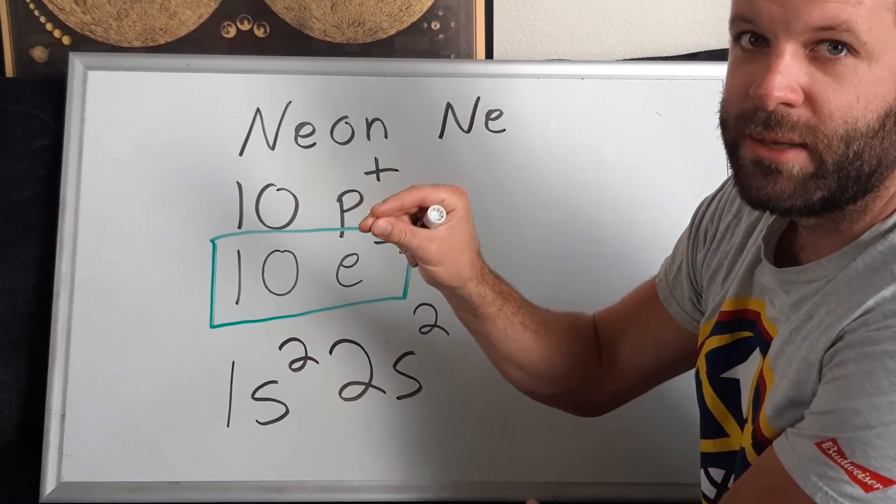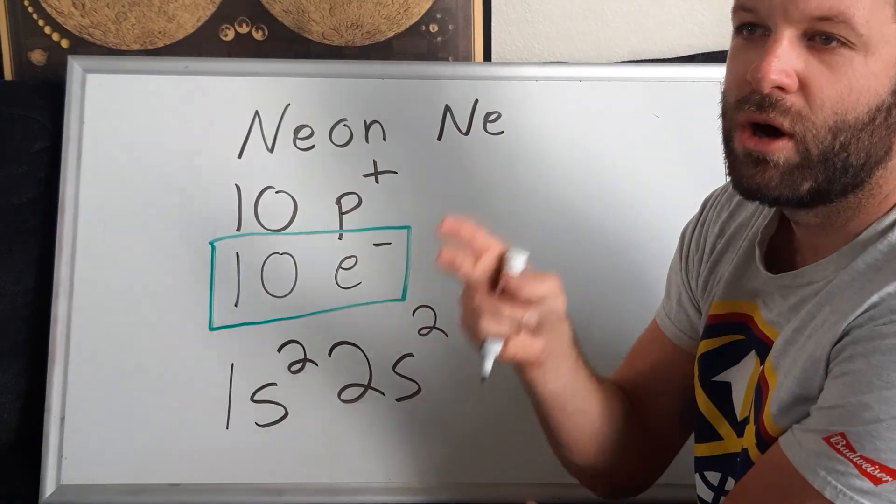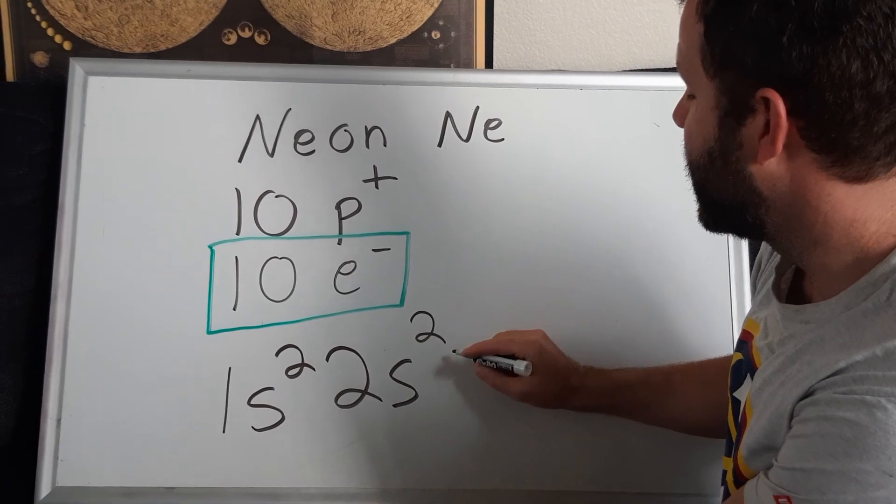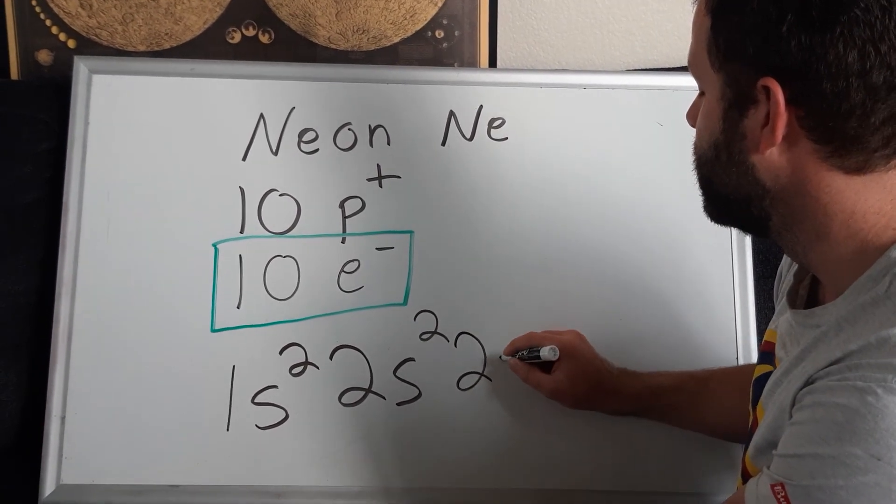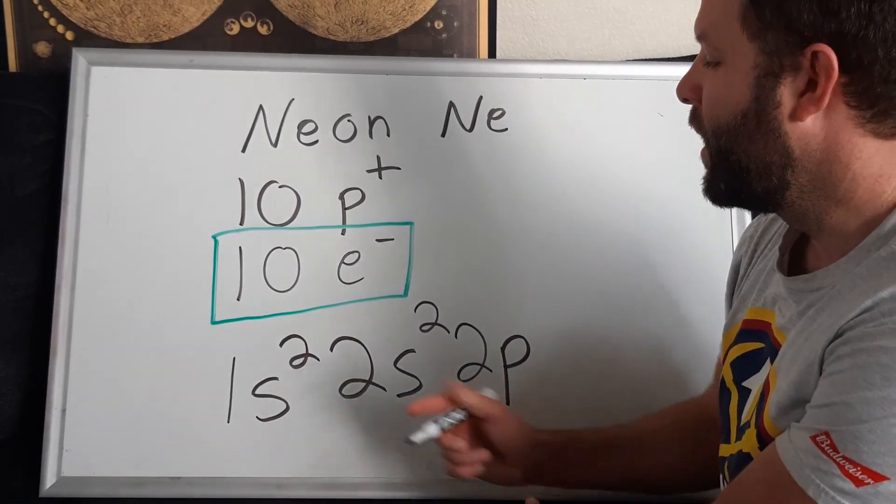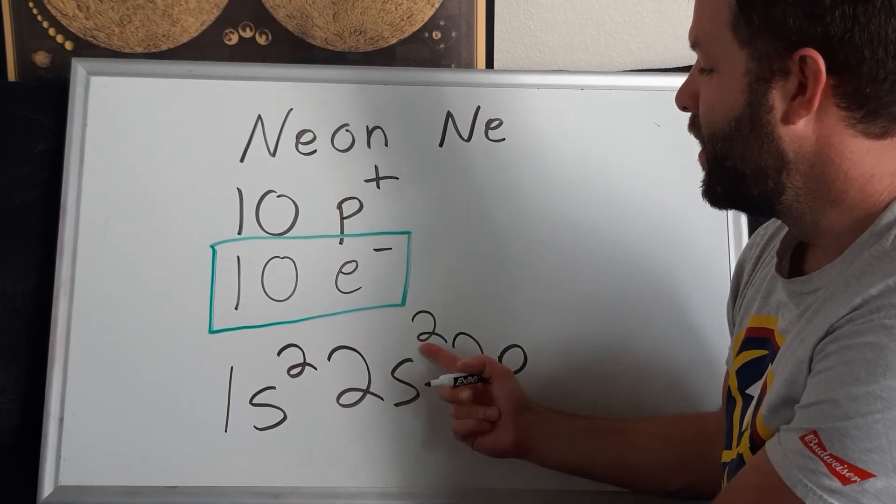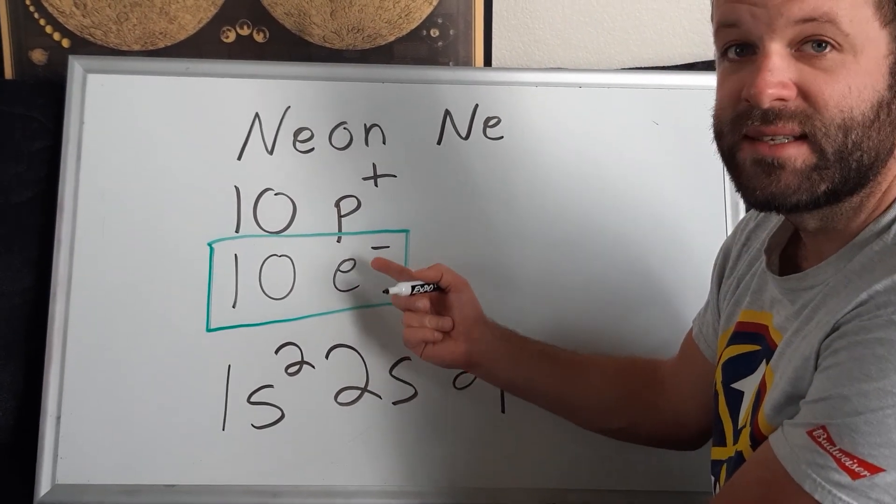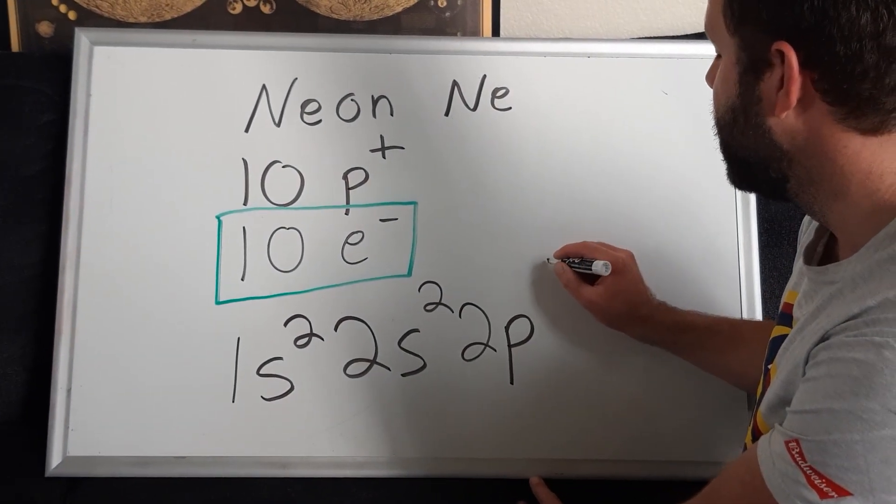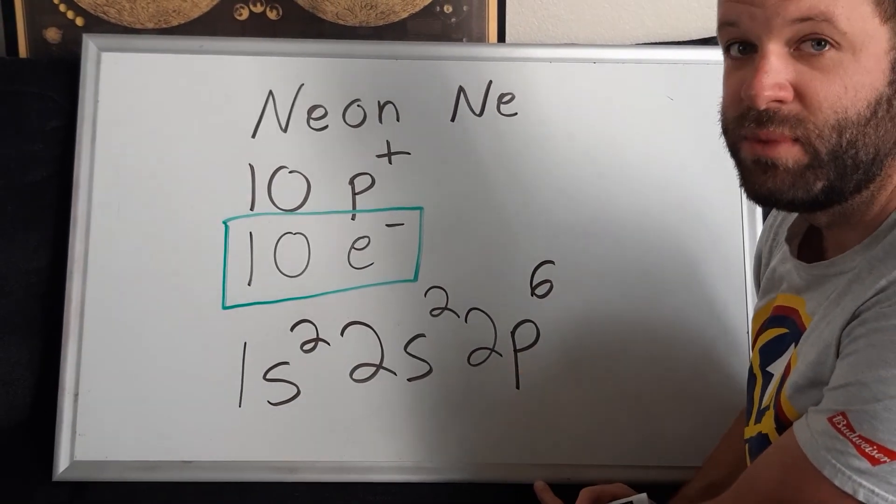Now when we jump across the periodic table to get to the p block, so once we hit boron, carbon, nitrogen, oxygen, fluorine, and neon, in the second energy level there's now the p orbital. Right now I have a total of four electrons in my 1s and 2s, which means I have six more electrons to assign. In the p orbital for neon, there are going to be six total electrons that exist in that 2p orbital.